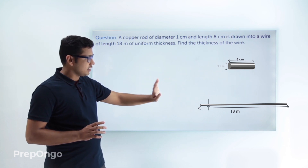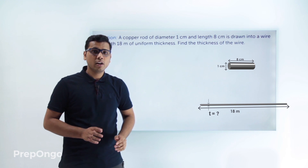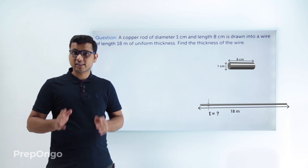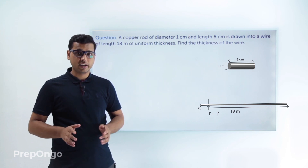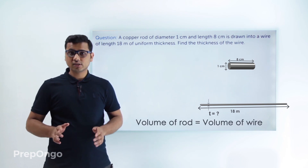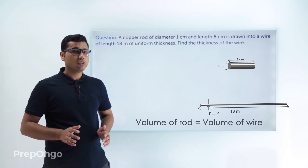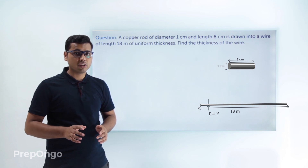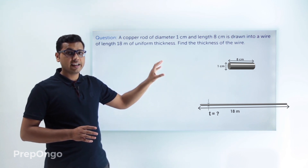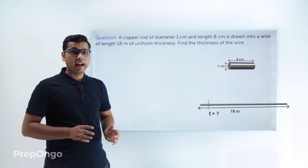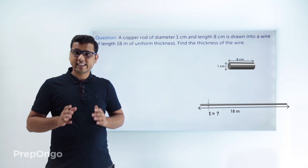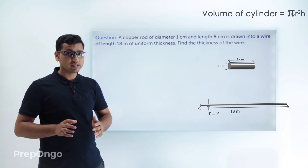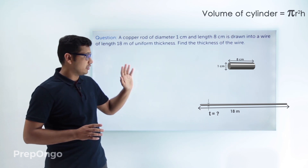Let's say the thickness is T — this we have to calculate. When one solid is drawn into another solid by melting or drawing, the volume of both solids always remains the same. So the volume of this rod and this wire will be equal. We can find the volume of the rod since it is in the form of a cylinder, using the formula: volume = π r² h.